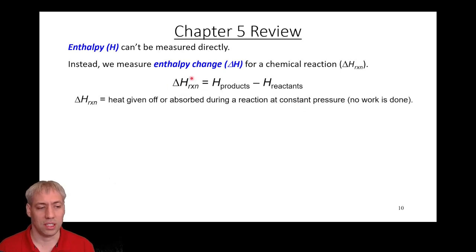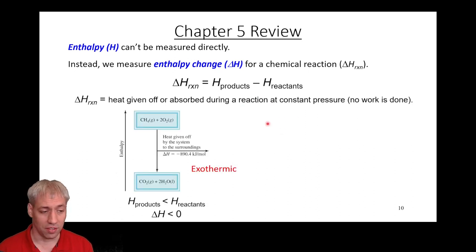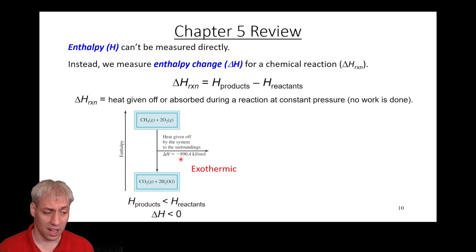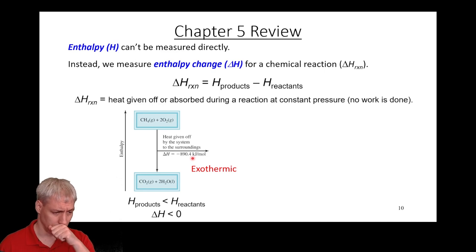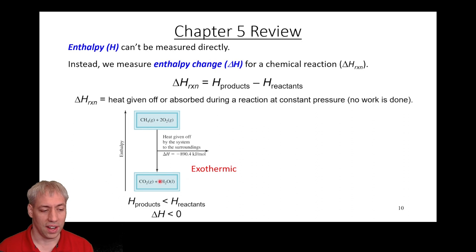We can calculate an enthalpy change for a reaction: delta H equals the enthalpy of products minus the enthalpy of reactants. This assumes none of that energy goes to work — all energy is given off as heat. For example, CH₄ and O₂ combined and ignited undergoes combustion to generate CO₂ and water. This is exothermic with a negative delta H, giving off minus 890 kilojoules per mole. The enthalpy of the products is much less than the reactants, so we're releasing that excess energy.